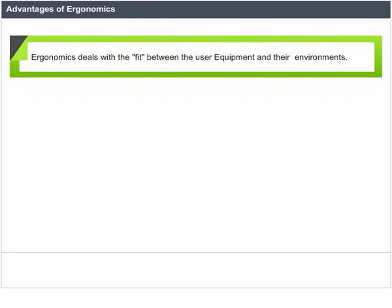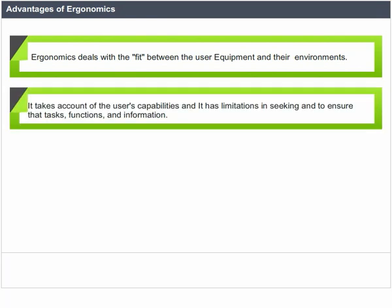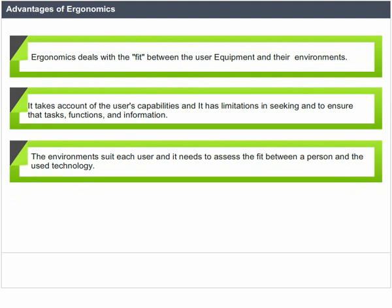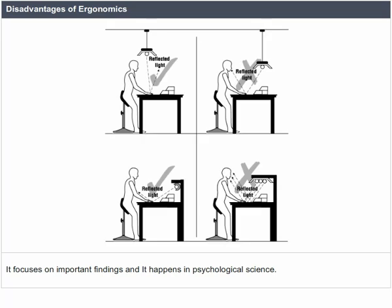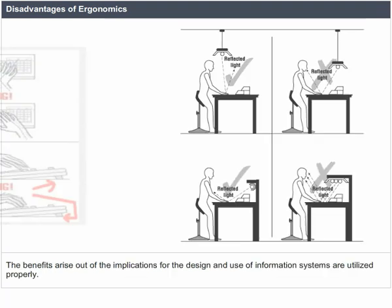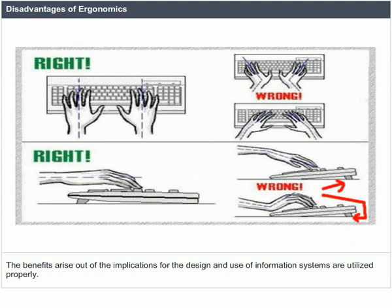Ergonomics deals with the fit between the user, equipment and their environments. It takes account of the user's capabilities and limitations, seeking to ensure that tasks, functions and information suit each user. Human factor specialists consider the job being done, the demands on the user, the equipment used — its size, shape — and how information is presented, accessed and changed. The disadvantages focus on findings in psychological science, and benefits arise from implications for the design and use of information systems.